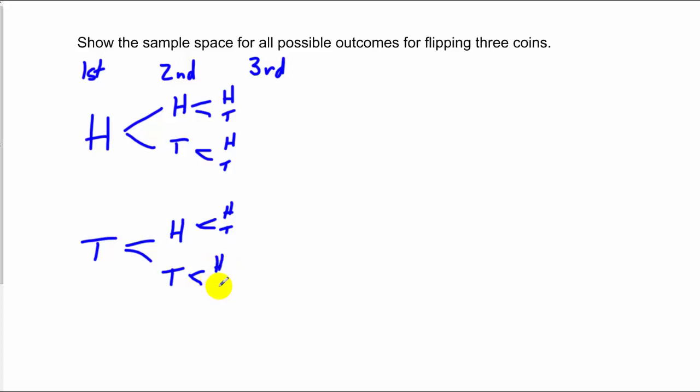So now if I want to draw my sample space, I have all my possibilities listed before me. And what I do is I follow the branches of these trees that I've made. So I could have three heads. That's one possible outcome. Two heads and a tail. I could have another two heads and a tail.